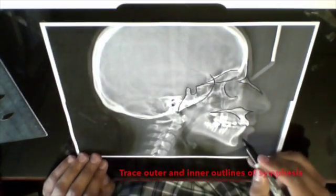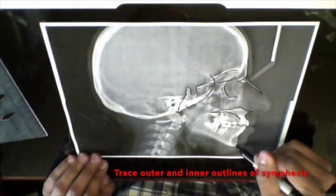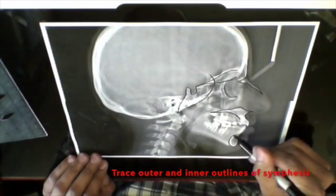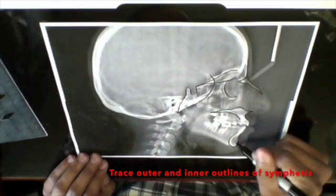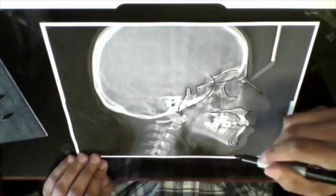Remember, always trace cortical bone outlines paying respect to anatomy. Trace the symphysis of the mandible. Trace both outer and inner cortical outlines of the symphysis. Remember, this is an important superimposition landmark.